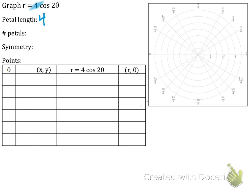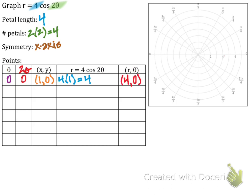For this first example, my petal length is the coefficient of cosine, which is four. We have two-theta, so n is two, giving us four petals. This is a cosine, so our symmetry is x-axis. Starting with theta equals zero: two times zero is zero, cosine of zero is one, so our ordered pair is (4, 0).